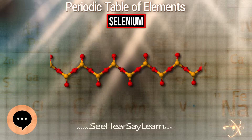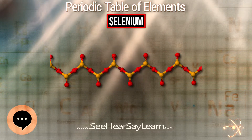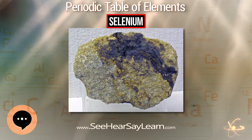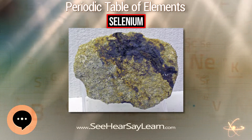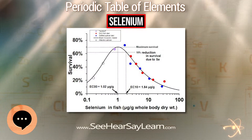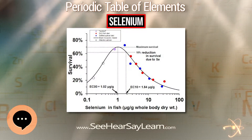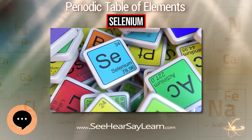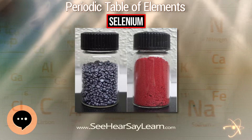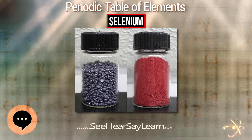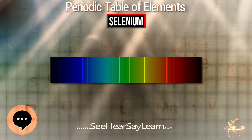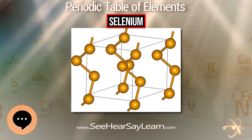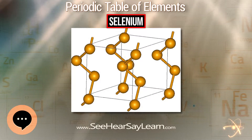The chief commercial uses for selenium today are glassmaking and pigments. Selenium is a semiconductor and is used in photocells. Applications in electronics, once important, have been mostly replaced with silicon semiconductor devices. Selenium is still used in a few types of DC power surge protectors and one type of fluorescent quantum dot.